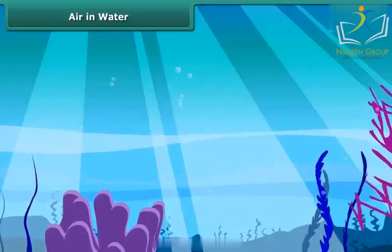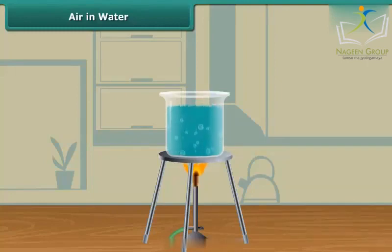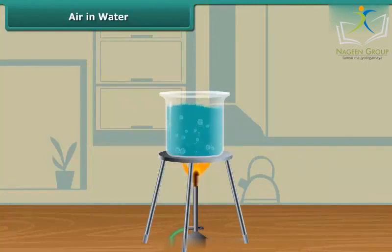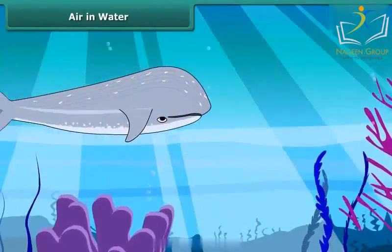Let us do an activity. Take some water in a beaker and heat it to boil. Can you see the bubbles coming out? Where are these bubbles coming from? They are coming from the water itself. Air remains dissolved in water at normal temperature, so we can't see it. When water is heated, the dissolved air comes out as bubbles. The animals and plants in water use this dissolved oxygen for respiration.